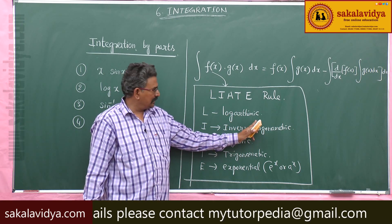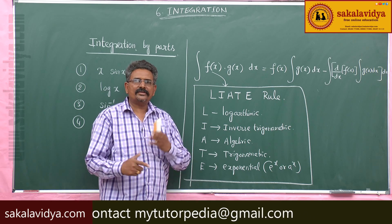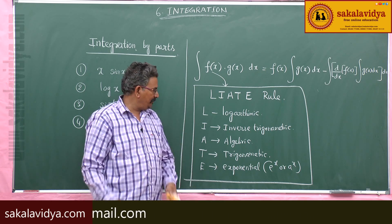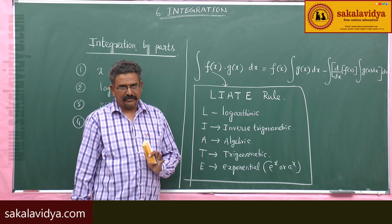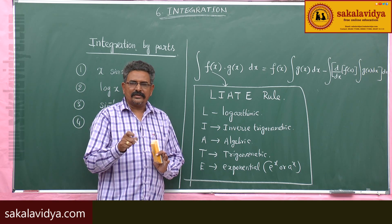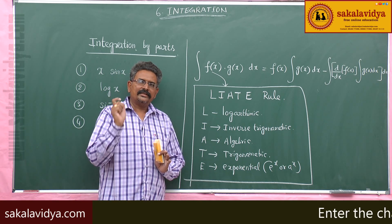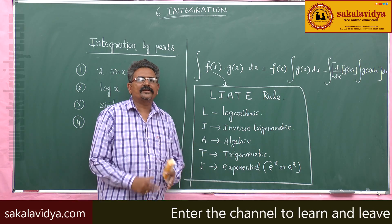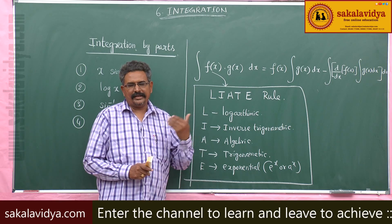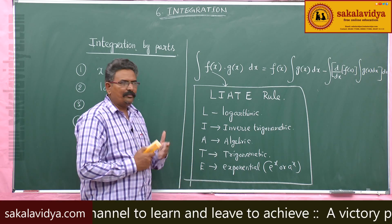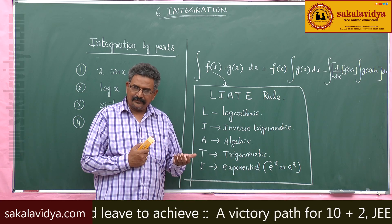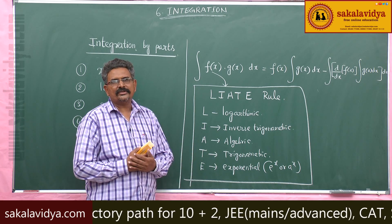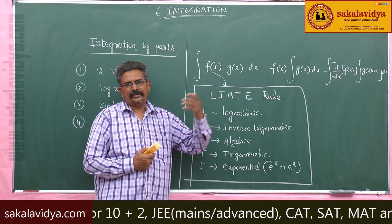L stands for logarithmic functions, such as log x or log(2x + 3). I stands for inverse trigonometric functions: sin inverse x, cos inverse x, tan inverse x, secant inverse x. A stands for algebraic functions: x, x square, x cube. T stands for circular or hyperbolic trigonometric functions: sin x, cos x, tan x, sinh x, cosh x. E stands for exponential functions: e to the power x or a to the power x.